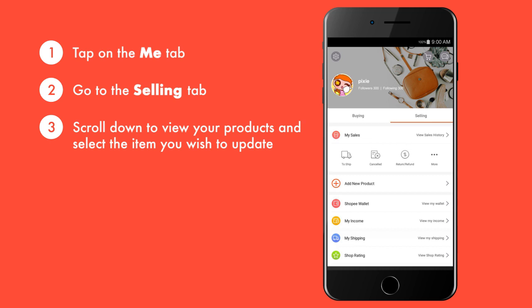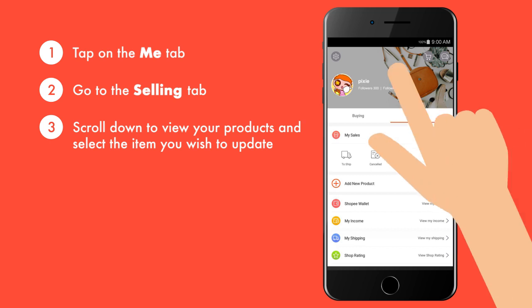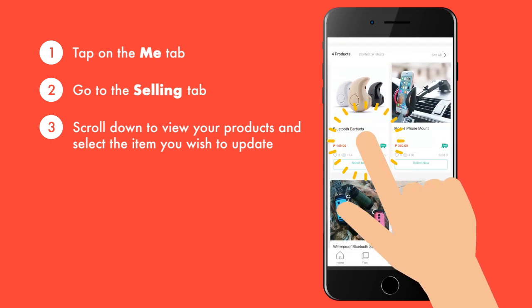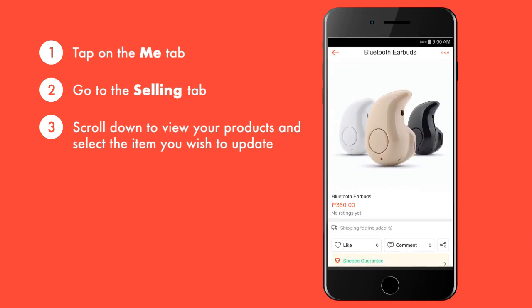Scroll down to view your products and select the item you wish to update. Tap the Options icon on the upper right corner, then Edit Product.